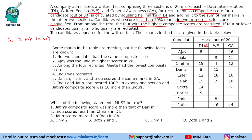10 candidates appear for the written test and their marks are given in a table below. Some data is missing and we are given additional conditions. Based on these, we need to fill in the information to the maximum possible and answer the questions. First, we need to calculate the composite score.